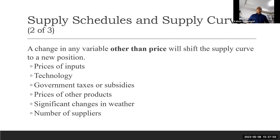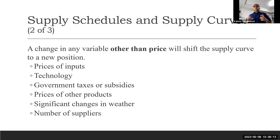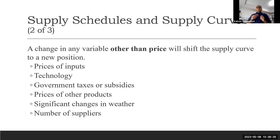Government taxes and subsidies — if we impose taxes on the seller, the price will increase, but the seller is not getting that full price; a portion of it is going to the government. So imposed taxes are going to reduce the supply. But if the government provides a subsidy, which is the opposite of a tax — for example, you sell one unit and get 100 from the customer, and the government pays you an additional 10 or 5 — that is going to increase the supply.